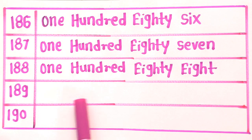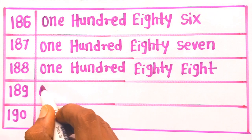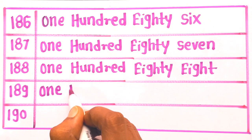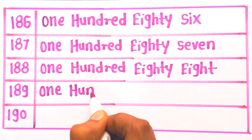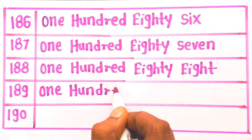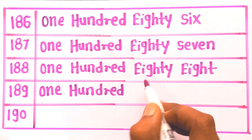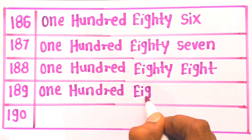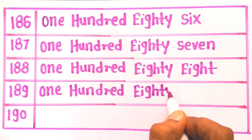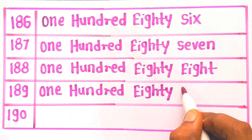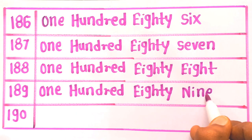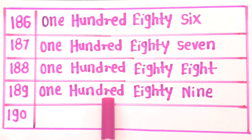Next is 189: O, N, E — 1. H, U, N, D, R, E, D — 100. E, I, G, H, T, Y — 80. N, I, N, E — 9. One hundred eighty nine. 189.